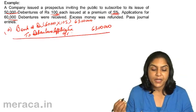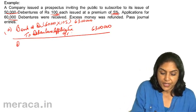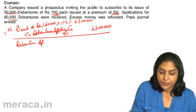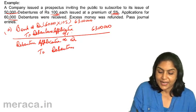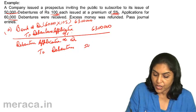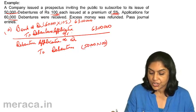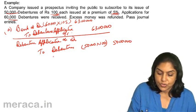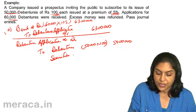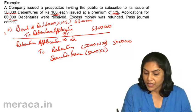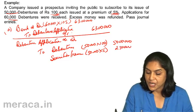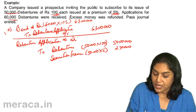On allotment of 50,000 debentures, debenture application account debit to debentures — debentures would be credited with the face value of 50,000 debentures of Rs.100 each, that is 50 lakhs. To securities premium: the amount is 50,000 debentures allotted into Rs.5, giving us Rs.2,50,000. So debenture application account is debited with Rs.52,50,000.